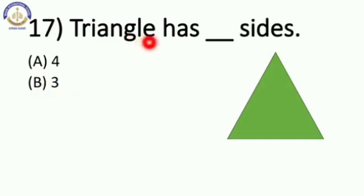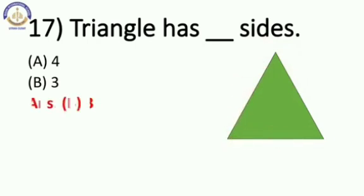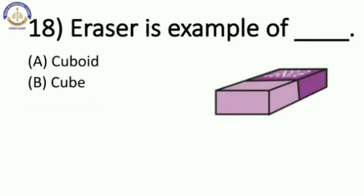Triangle has blank sides. Triangle has 1, 2, and 3 sides. So our answer is B, 3.